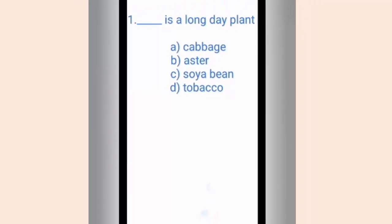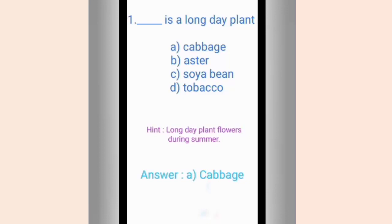Question number one. Dash is a long day plant. The options are A. Cabbage, B. Aster, C. Soya bean, D. Tobacco. The hint given is long day plants flower during summer. The correct answer is option A, Cabbage. In summer the days are long, warm, and nights are short. These plants need long duration of light for flowering beyond their critical photoperiod.